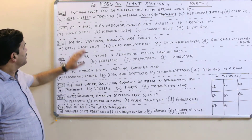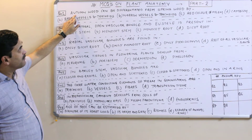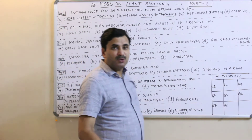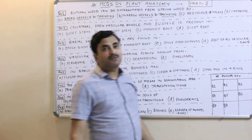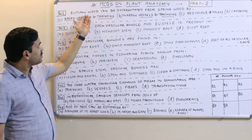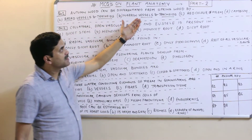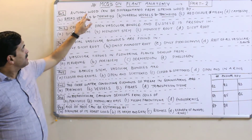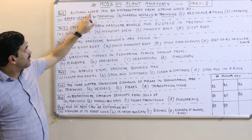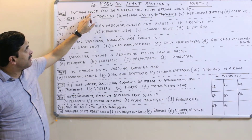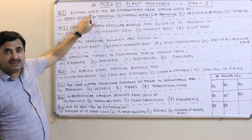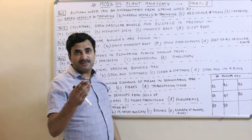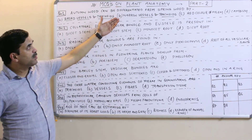Question number one: Autumn wood can be differentiated from spring wood. There are two types of wood — autumn wood and spring wood. Autumn wood is formed in winters, also called late wood. Spring wood is formed in summers, also called early wood. In autumn wood, the vessels and tracheids formed are narrow in diameter.